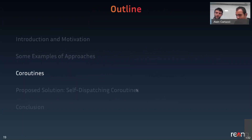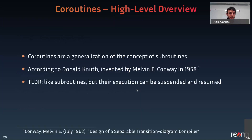Let's start discussing coroutines, because the solution Alain will present is heavily based on them. At a high level, coroutines are a generalization of the concept of functions or subroutines, according to Donald Knuth. They were invented by Melvin Conway in 1958. Coroutines are like subroutines, but their execution can be suspended without destroying the execution context, and the execution can be resumed later exactly where it stopped the last time it was suspended.